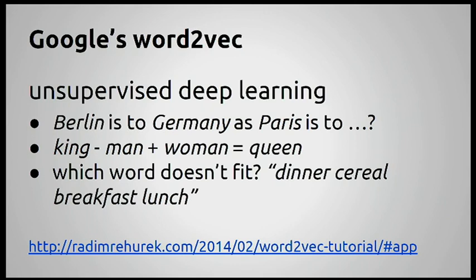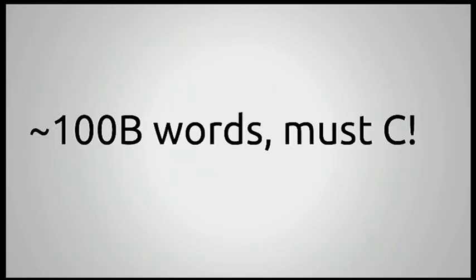This talk is not actually about Word2Vec itself or the math behind it — it's more about the implementation. Google also released their own implementation along with the research paper. Since this has to be trained on really large corpora — hundreds of millions of sentences — it needs to be super fast. So Google's implementation is written in very tightly optimized C.